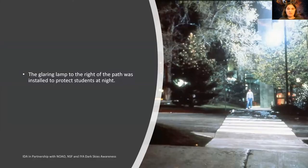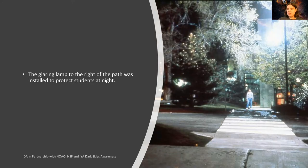There's also the problem of glaring lamps that don't necessarily light the area they're supposed to. They can blind people trying to get through, or light up areas they're not meant to. Like in this example, lamps on a college campus were built to protect students at night, but they're lighting up the trees. Very few people walking through a park are looking up at trees — they're looking at the sidewalk. So why light up the trees?